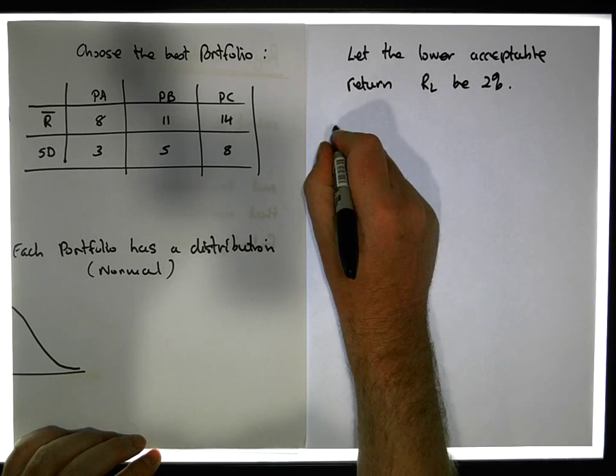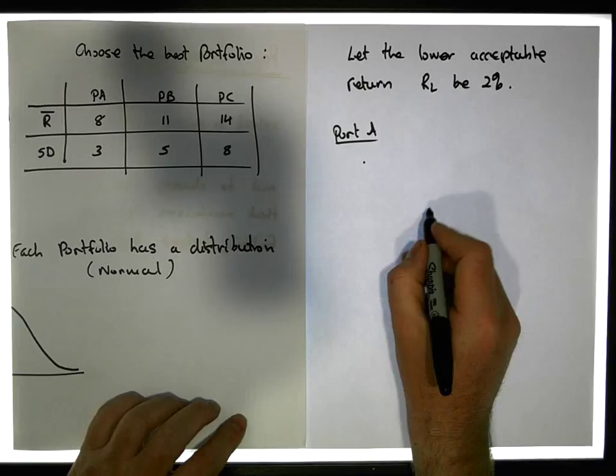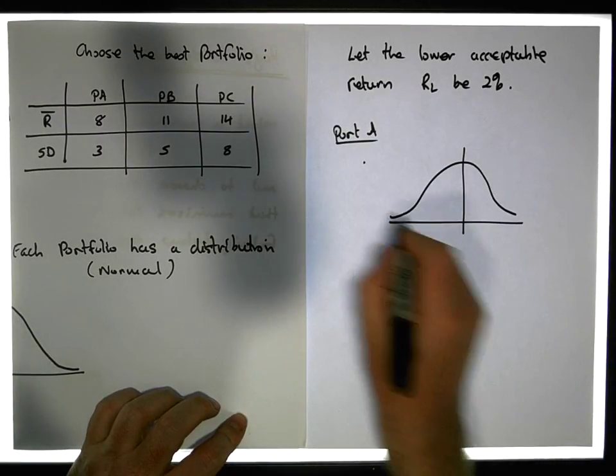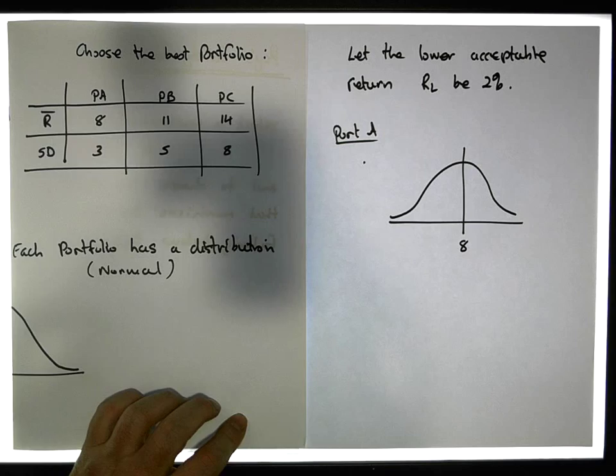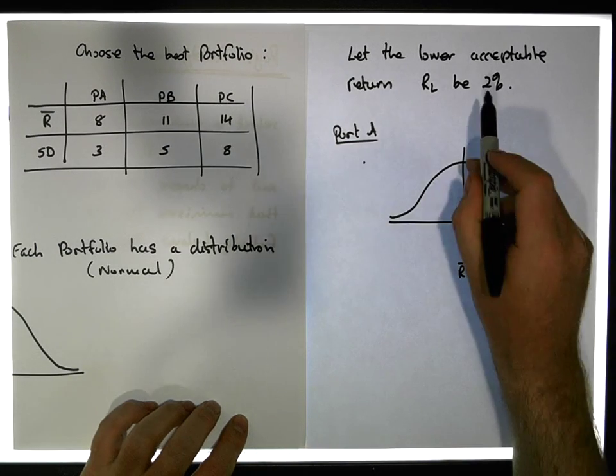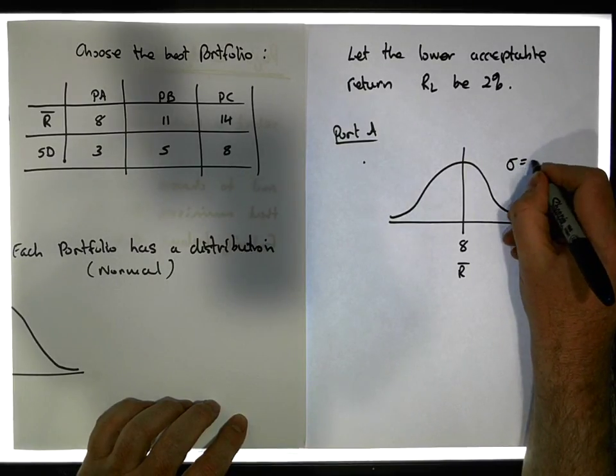Let's have a look at portfolio A. Portfolio A is centered on 8, that's its expected return, that's its R bar. It also has a standard deviation, its sigma is equal to 3.